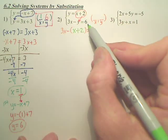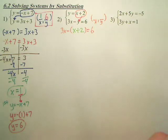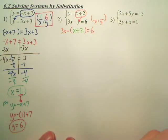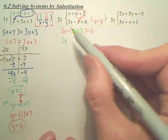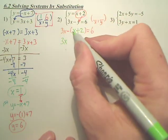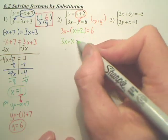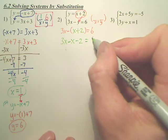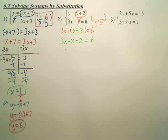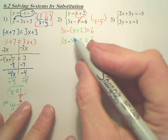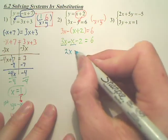3x minus y equals 6. I replace the y value with x plus 2. Now, I have 3x minus x. So you're kind of distributing this negative. That becomes a minus x and a minus 2. You've got to distribute that negative. These two combine to give you 2x.